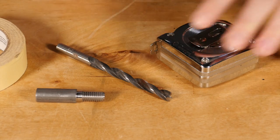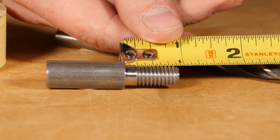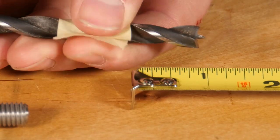Now that we have the right drill bit, measure the length of the threaded stud and add an eighth of an inch. Then use tape to mark that depth on the drill bit.